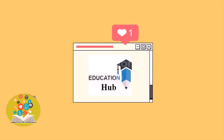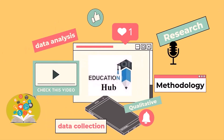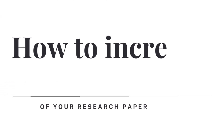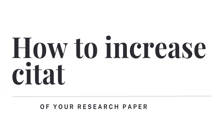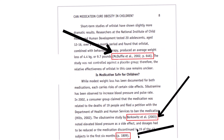Hi, I'm Ayesha. You are watching Educational Hub. Citation count — you know the significance of that number if you're a published researcher. A major indicator of its impact on research has been the number of times a scientific paper is cited.